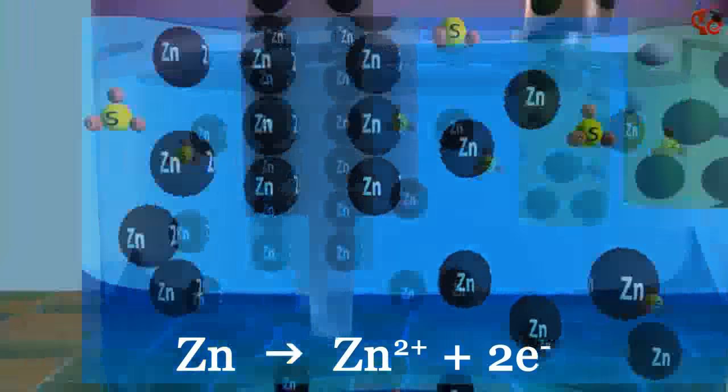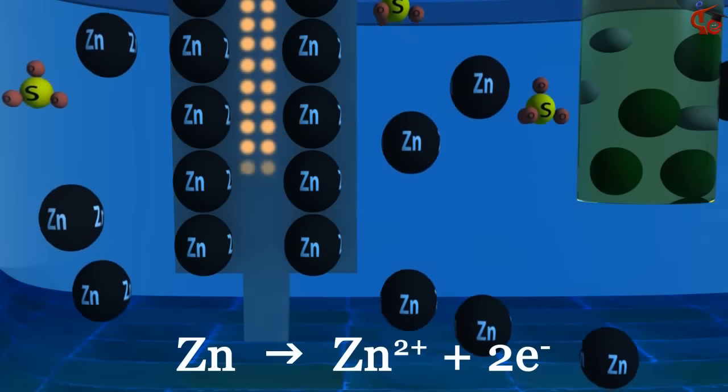For this reason, the zinc bar is oxidized, producing a zinc ion and two electrons per zinc atom.